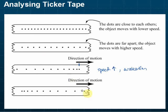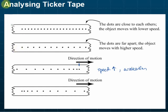For this one, initially the dots are very far from each other, and after that they become very close to each other. So initially it moves very fast and at the end it moves slowly — the speed goes down. The speed goes down, and this is deceleration.